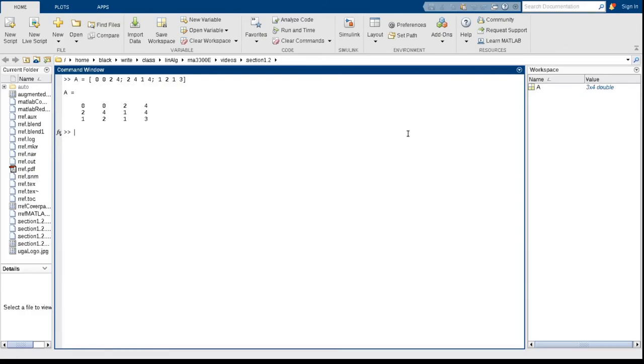Now notice I did not put a semicolon there, so it printed out the result. If I want to find the reduced row echelon form, the command is rref of A. And we get it in one step. Now notice it created a new variable called ans for answer. That's the previous answer.